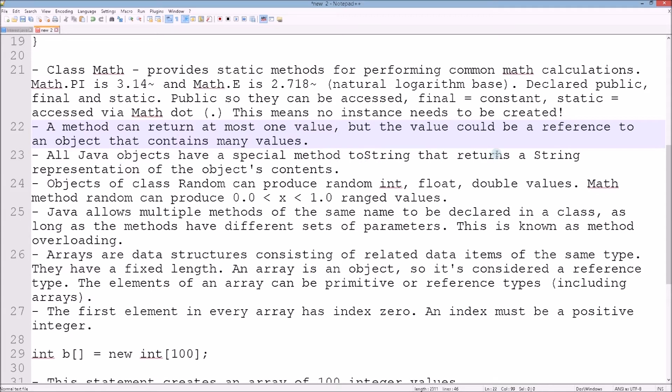All Java objects have a special method toString that returns a string representation of the object's contents. Objects of class Random, which we also saw in the previous episode - episode 8 when we did a deck shuffling application - can produce random integer, float, and double values.